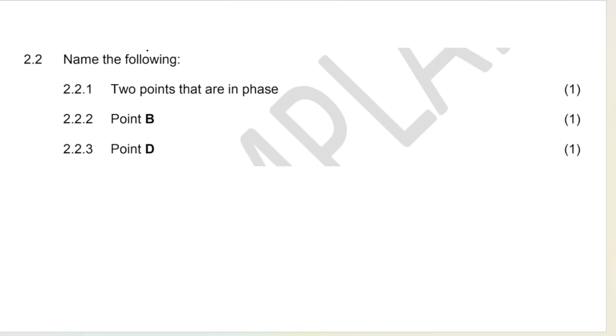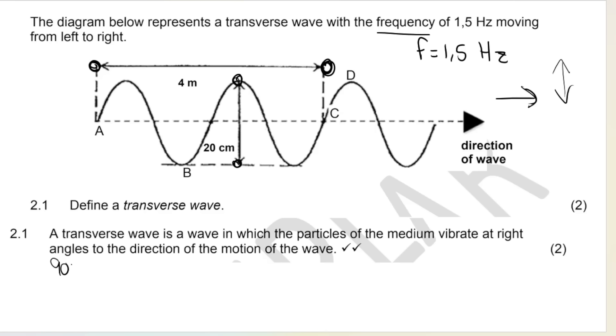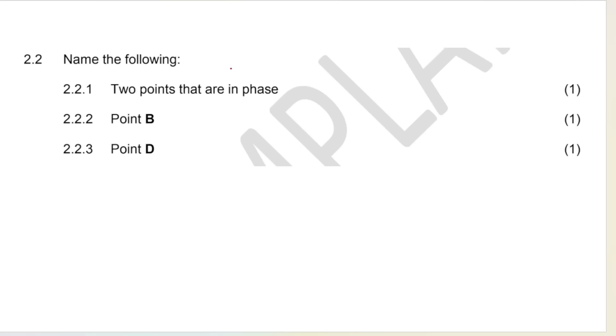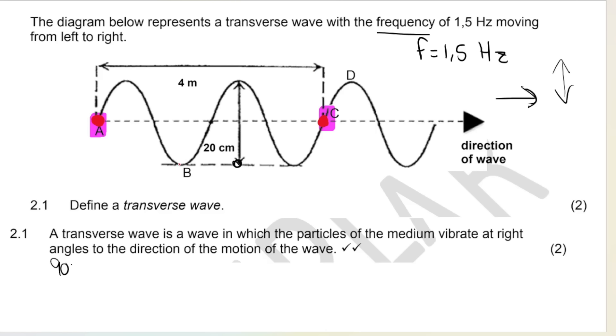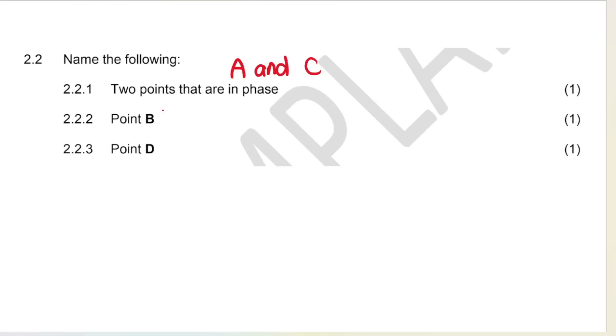2.2.1. Name two points that are in phase. So remember in phase means that they are separated by an integer number of wavelengths. So if we look at the diagram that I have over here, we've got this, this, and this. Those would be in phase, but we have no labels for these. So that's not going to help. All the troughs are in phase, but again, we don't have a label for that. We have A and we have C. Those are in phase. So A is a point over here just before I get to the crest. C is a point over here just before I get to the crest. So this would be A and C. You have to give me both because they want two points that are in phase. You have to give it to me in a pair. Name B. B is what we call a trough. And then they want D. D is what we call a crest. So this would be trough and D would be crest.